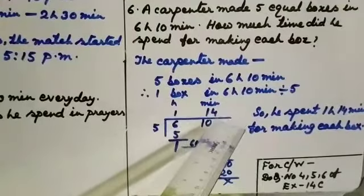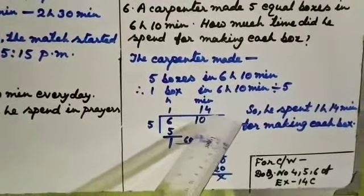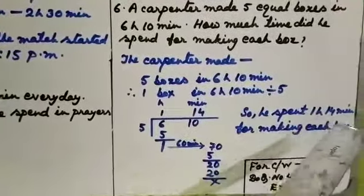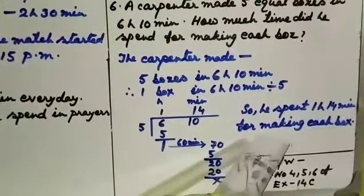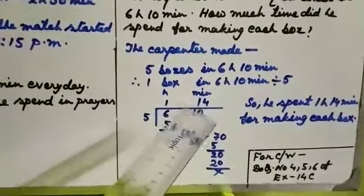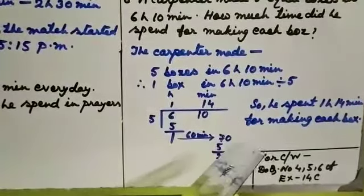That means 1 hour 14 minutes. So what you will write in your answer? He spent 1 hour 14 minutes for making each box. Clear? So what you will do in your CW copy?